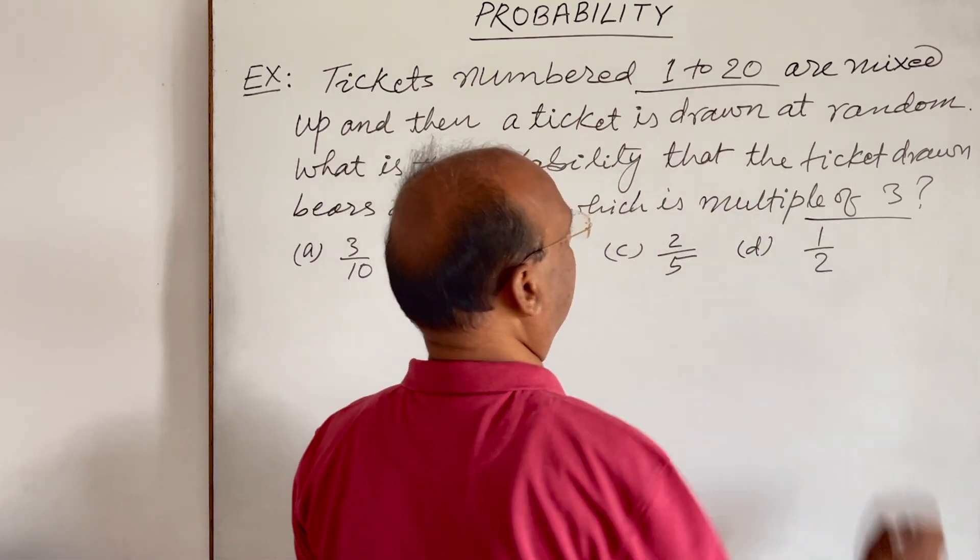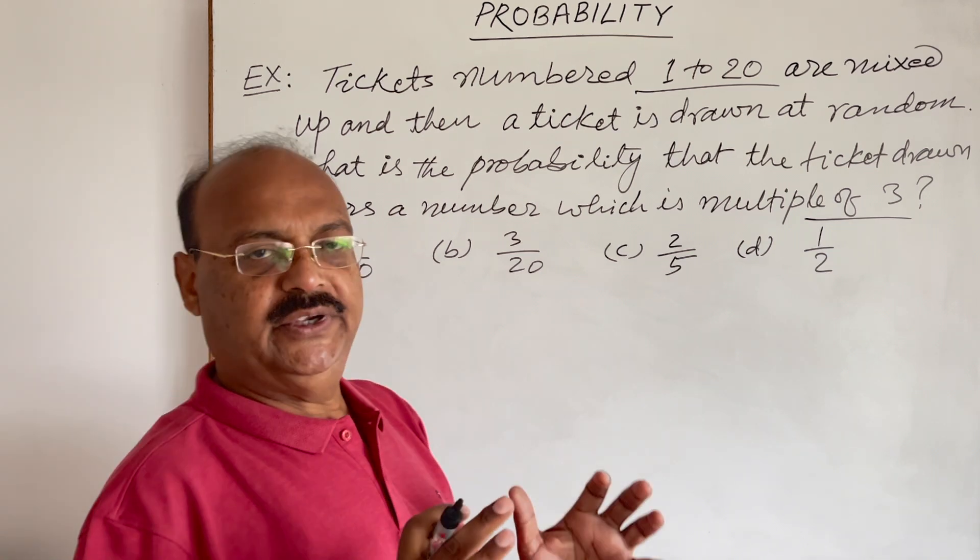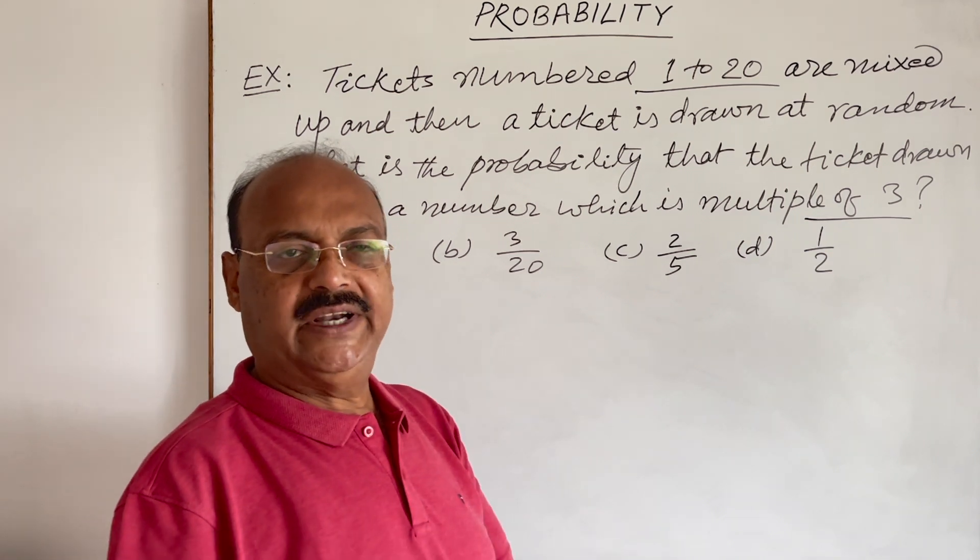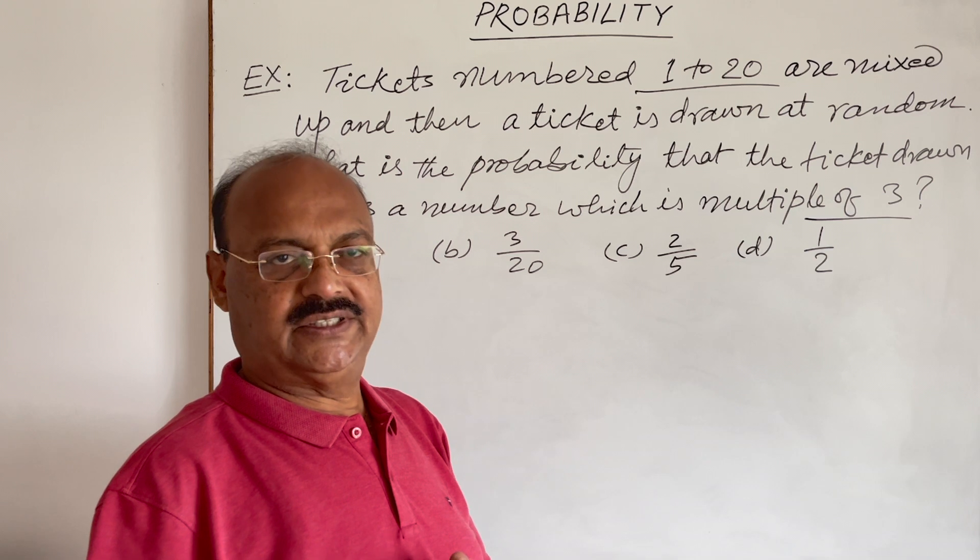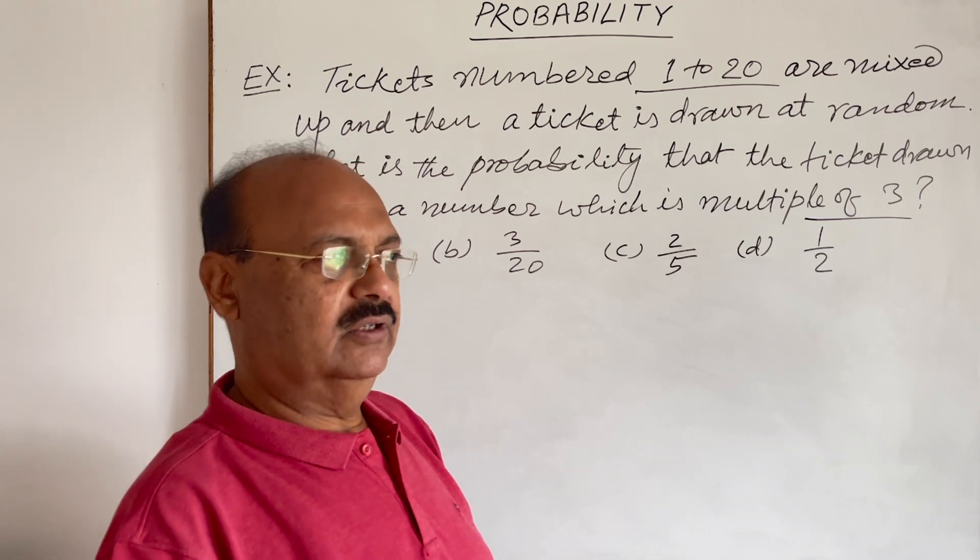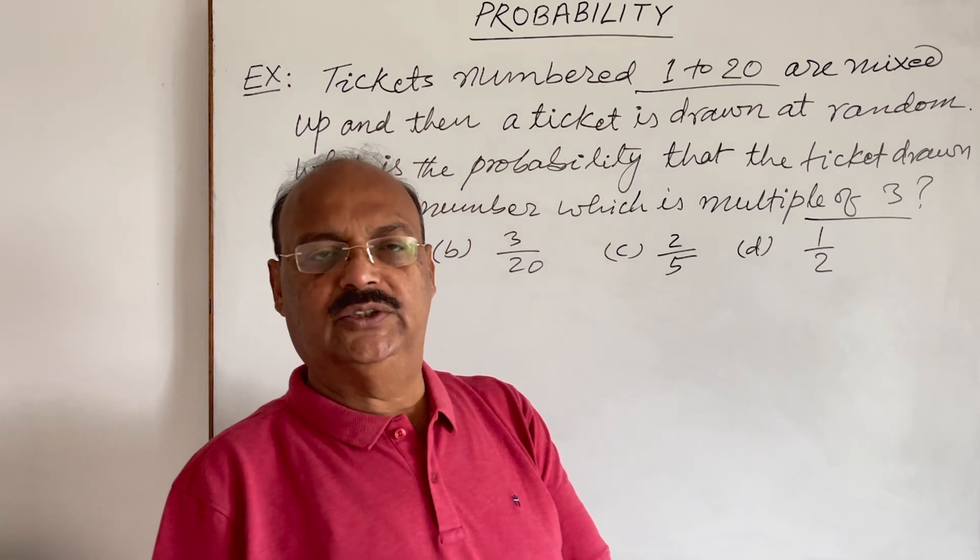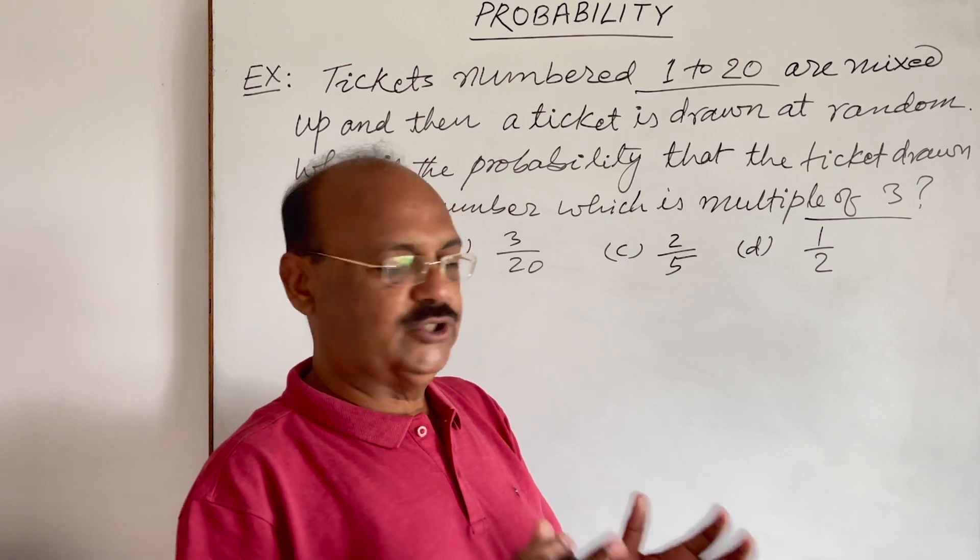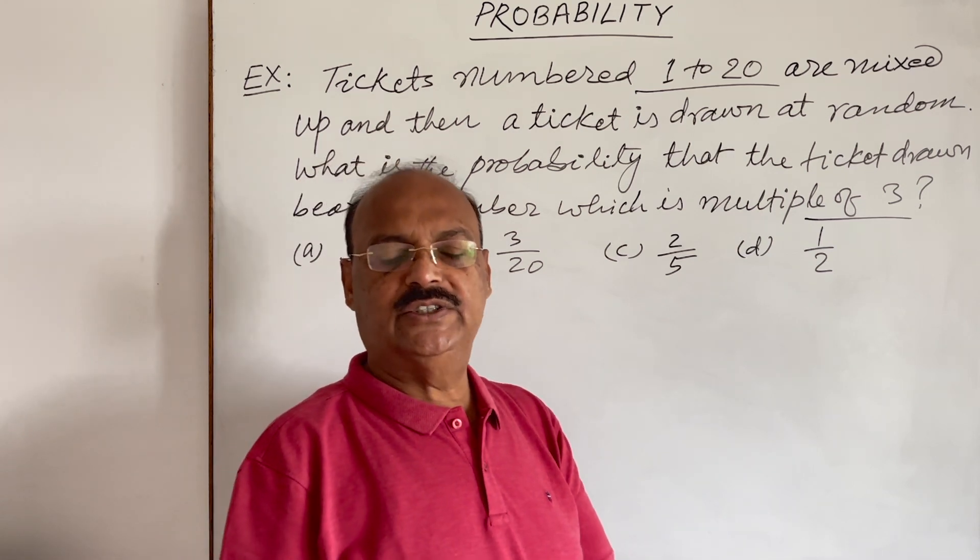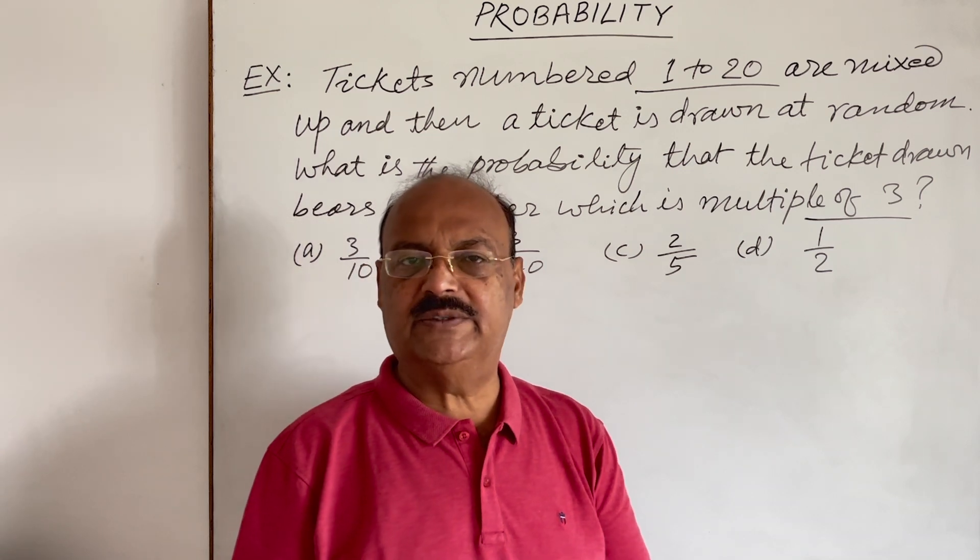The total number of tickets are 20, so that total number of tickets will be known as number of elements in sample space. That is the total number of possible outcomes. Whenever you select a ticket, maybe 1 to 20, the total number of possible outcomes is 20, which is known as sample space.